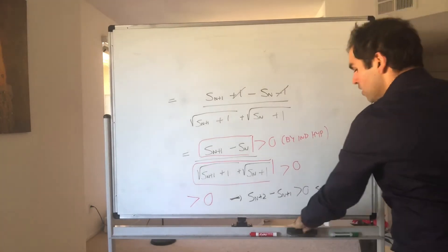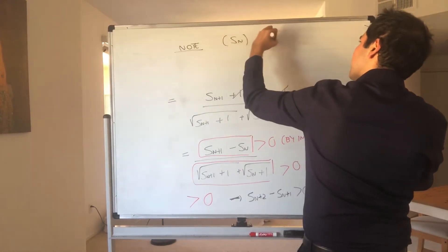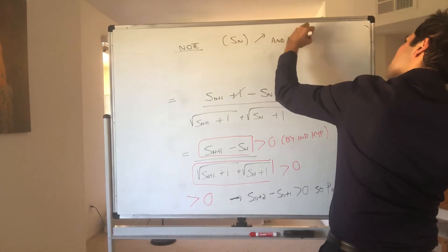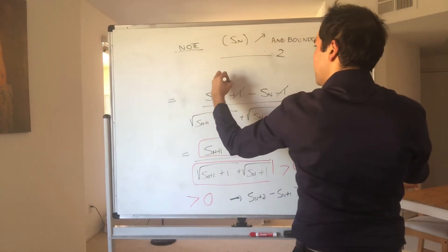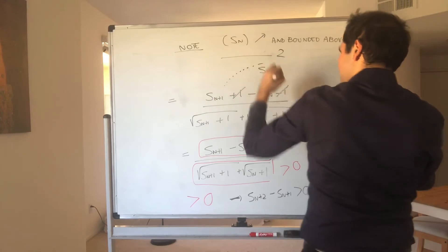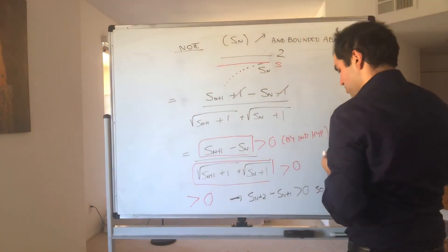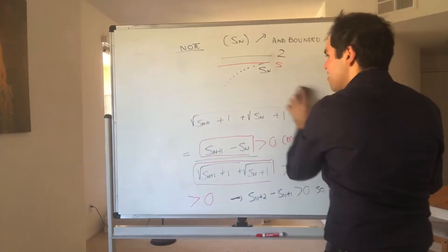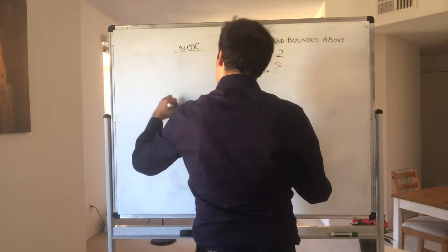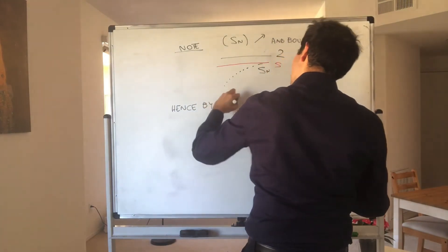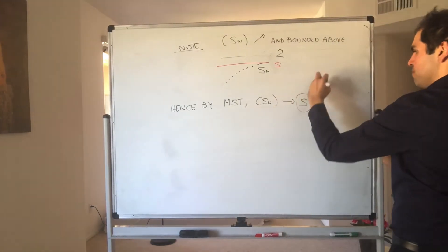Hence we can now conclude. Note that Sn is increasing and bounded above — the sequence is bounded above by 2 and it's increasing. Therefore, by the monotone sequence theorem, the sequence must converge to some limit S.